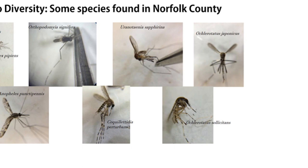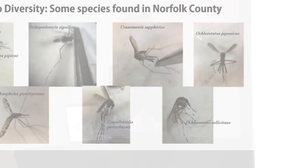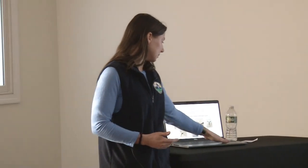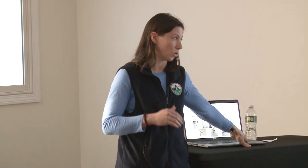On the far right on the bottom is Oclerotatus solicitans. That's one you don't need to worry about as much in this town — it's the salt marsh mosquito. In our communities on the coast, in Quincy and Weymouth, they have really high numbers of these depending on tides and flooding in salt marsh areas, and they are another very aggressive human biter. All of these different mosquito species have different personalities — they like to eat different things and are active at different times of day. These are really important things to know when you want to try to avoid or control mosquitoes.